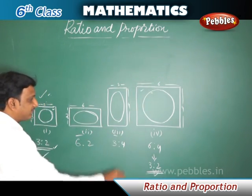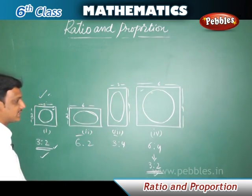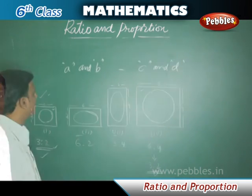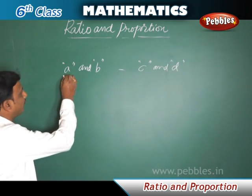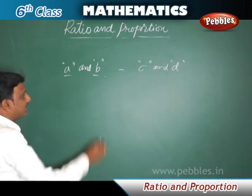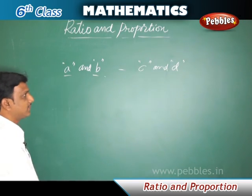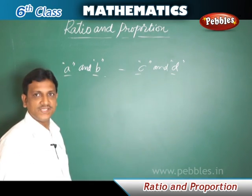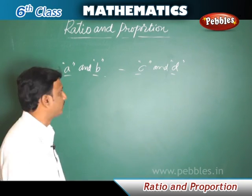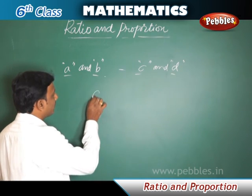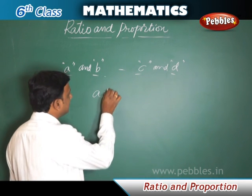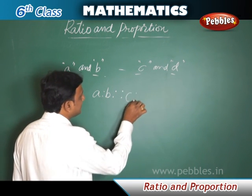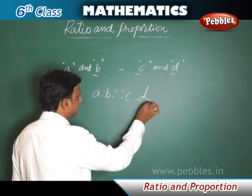In pictures 2 and 3 the size was not changed according to proportion. When the ratio of A to B is equal to the ratio of C to D, we say they are in proportion. We write it as A is to B as C is to D.